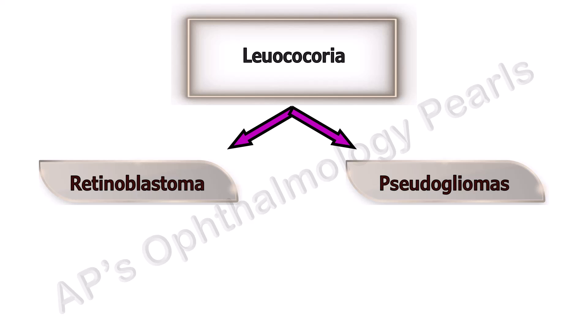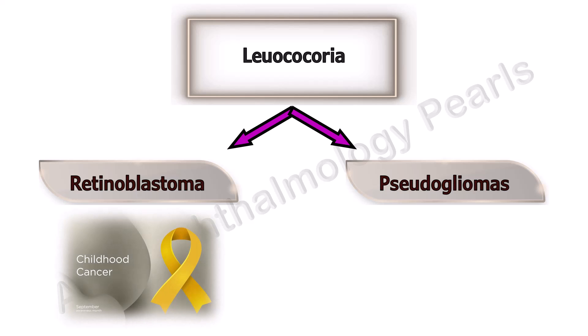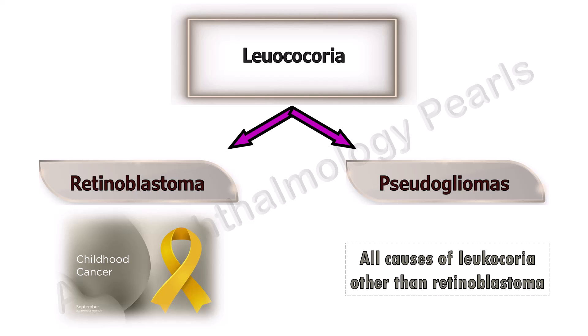The two causes of Leukochorea are Retinoblastoma and the Pseudogliomas. Retinoblastoma is the most important cause because it is the only malignant cause and can be fatal if not treated. All other causes of Leukochorea are termed Pseudogliomas, because Retinoblastoma is a true glioma, and since all other conditions are not gliomas but are differential diagnoses of Retinoblastoma, they are collectively termed Pseudogliomas.